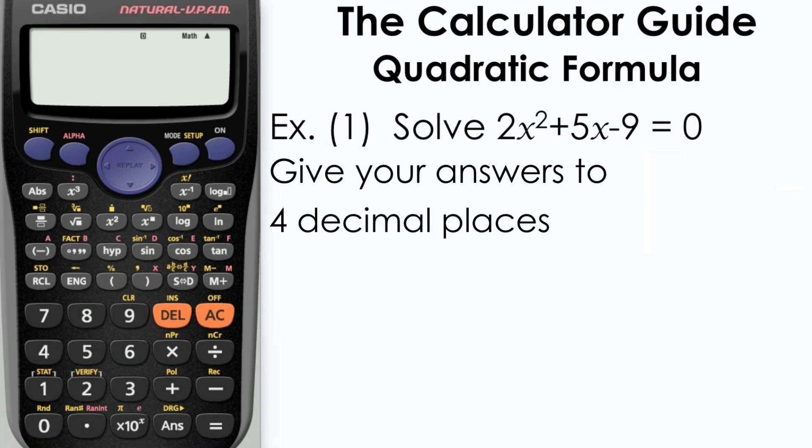In example one we need to solve 2x² + 5x - 9 = 0, giving our answers to 4 decimal places.